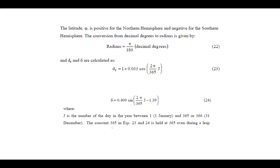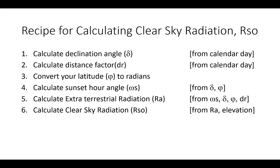Notice that all of these calculations are done in radians, so you have to convert your latitude to radians as well before you start doing these calculations. There's a recipe for calculating clear sky radiation. It's a long drawn-out affair. You have to calculate the declination angle, the distance factor, convert your latitude to radians, calculate the sunset hour angle, then finally calculate extraterrestrial radiation, and then finally calculate clear sky radiation. It's kind of a long process, but it gets you where you need to be so that you can finally calculate net radiation.